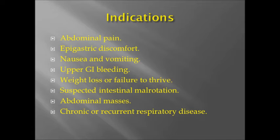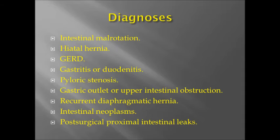Pediatric upper GI fluoroscopic exams are one of the most commonly performed pediatric fluoroscopic studies. Indications for this exam may include abdominal pain, epigastric discomfort, nausea and vomiting, upper GI bleeding, weight loss or failure to thrive, suspected intestinal malrotation, abdominal masses, or chronic or recurrent respiratory disease. The upper GI examination can be used to diagnose a variety of different conditions, some of which are listed on the following slide.